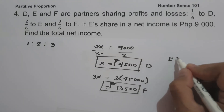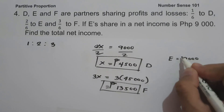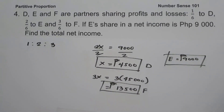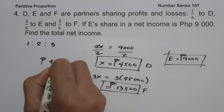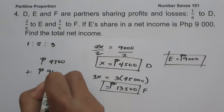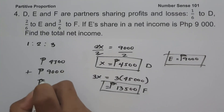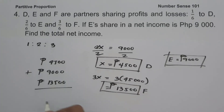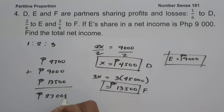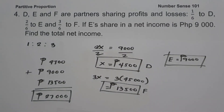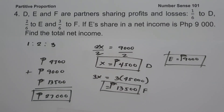The net income of E is 9,000 pesos. To determine the total net income, we add: 4,500 plus 9,000 plus 13,500, which gives us 27,000 pesos. So the total net income is 27,000 pesos. I hope you've learned from this video. Thank you so much for watching and God bless us all.